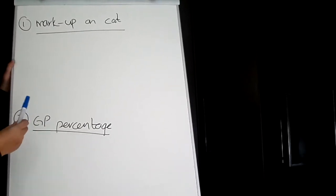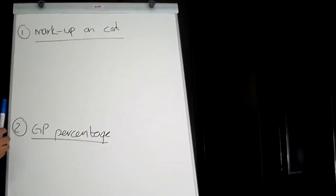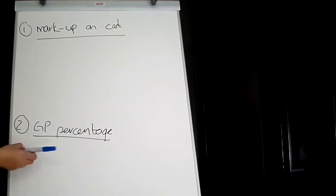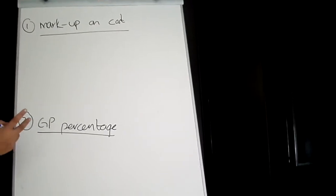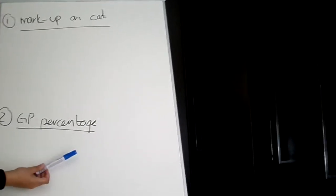Hi guys, this video shows you the differences in calculating your selling prices and cost prices depending on the type of markup you are using. There are two markups which you need to know how to calculate. The first one is a markup on cost and the second one is a gross profit percentage.